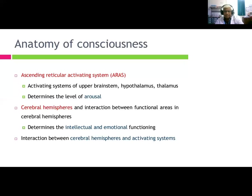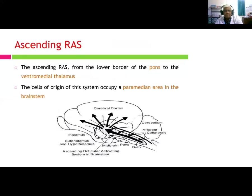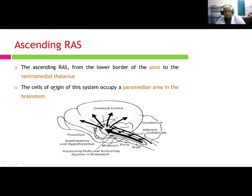The ascending reticular activating system runs from the lower border of the pons to the ventromedial thalamus. The cellular system occupies a paramedian area in the brainstem. This ascending area extends from the lower border of the pons to the ventromedial thalamus.